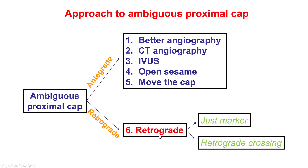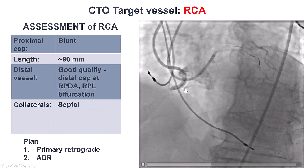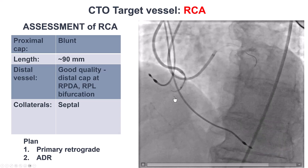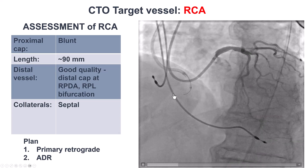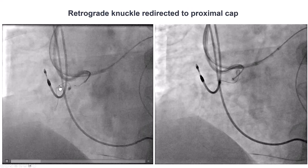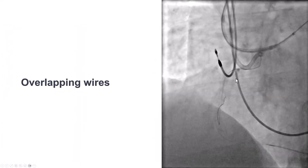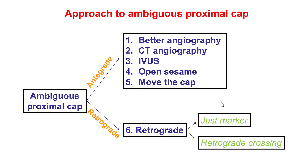Last but not least, number six for approaching an ambiguous proximal cap is to use the retrograde approach. This can be done either by advancing a retrograde wire that serves as a marker for antegrade crossing, or by trying to cross the lesion retrogradely. This is an example of a patient who has a proximal RCA CTO — not really ambiguous but fairly blunt. A retrograde wire was inserted, which delineated exactly where the location of the vessel is, and that helped advance an antegrade guide wire alongside the retrograde guide wire, followed by the reverse CART.